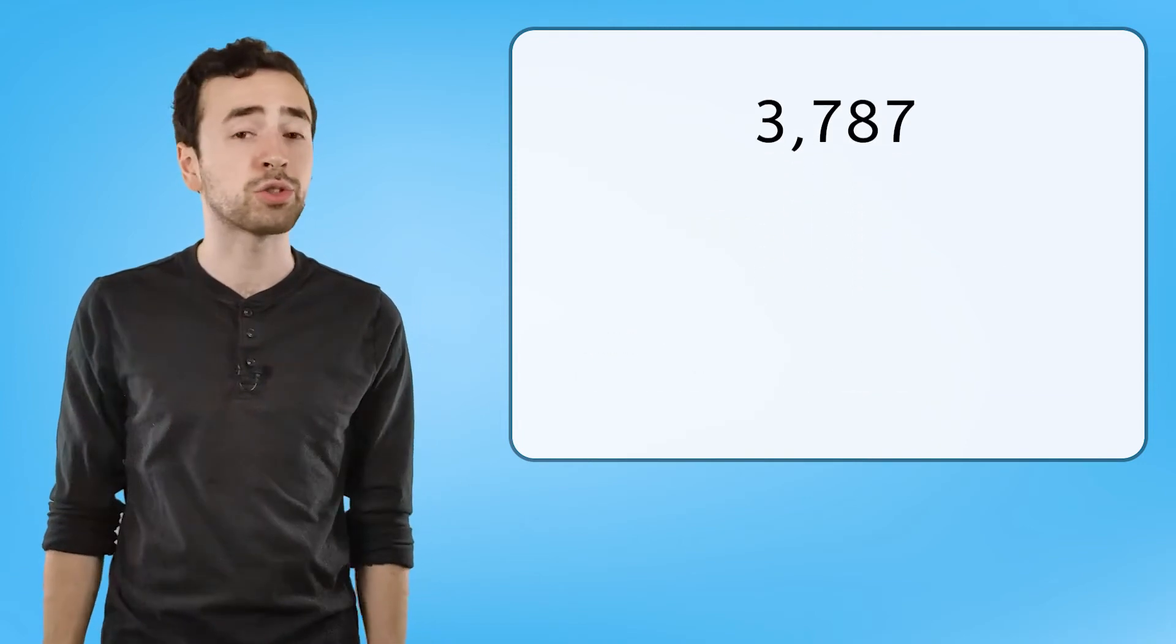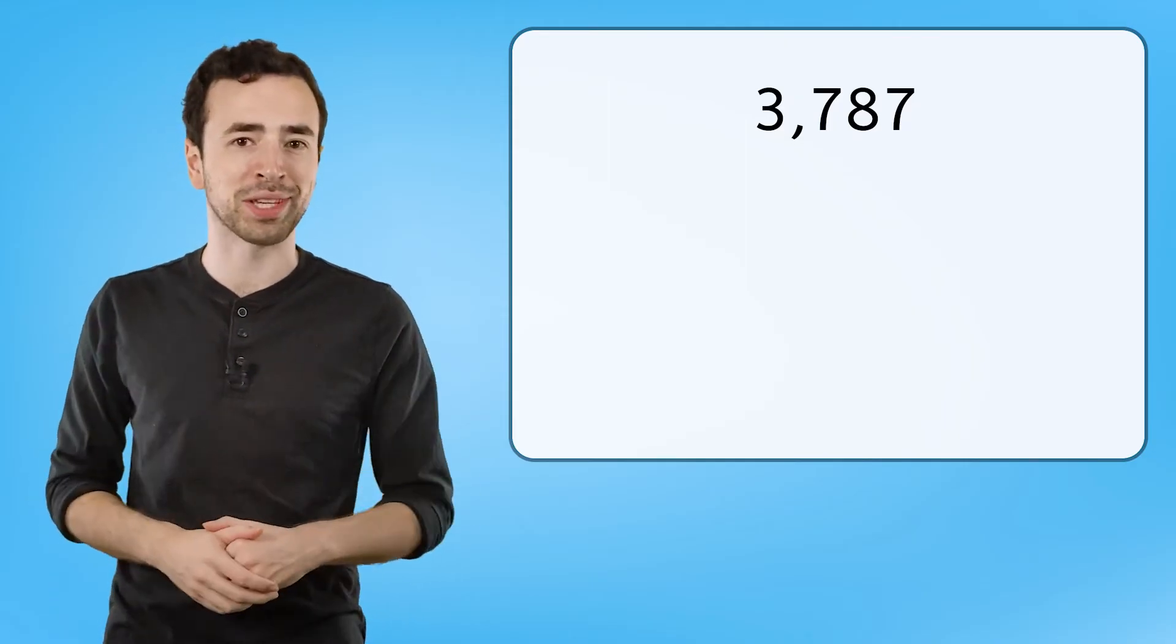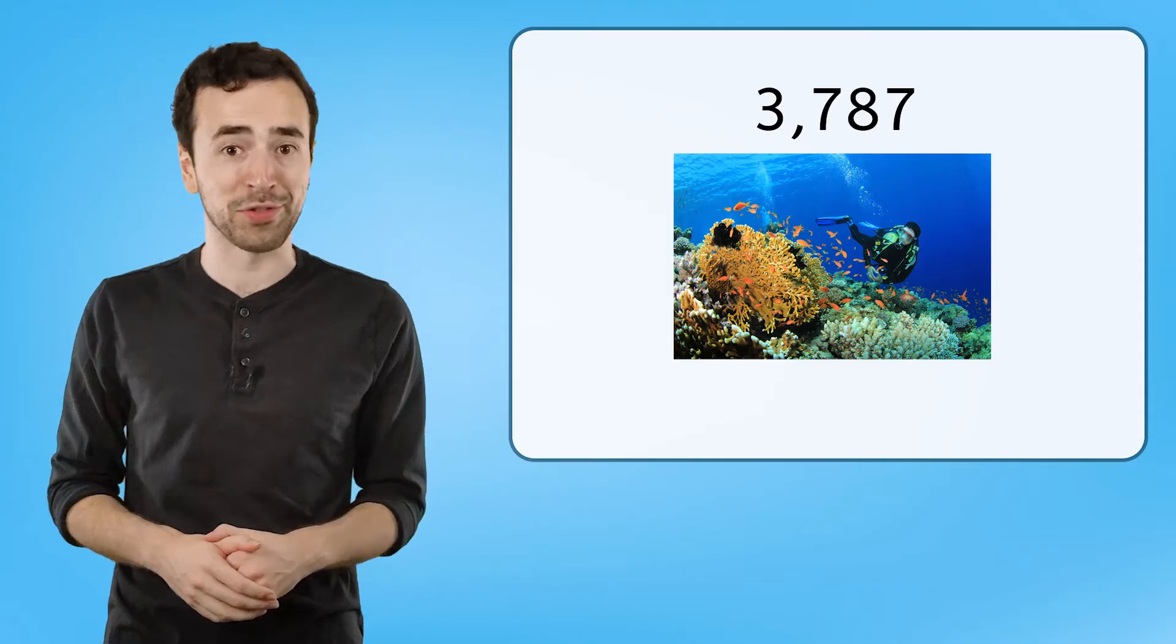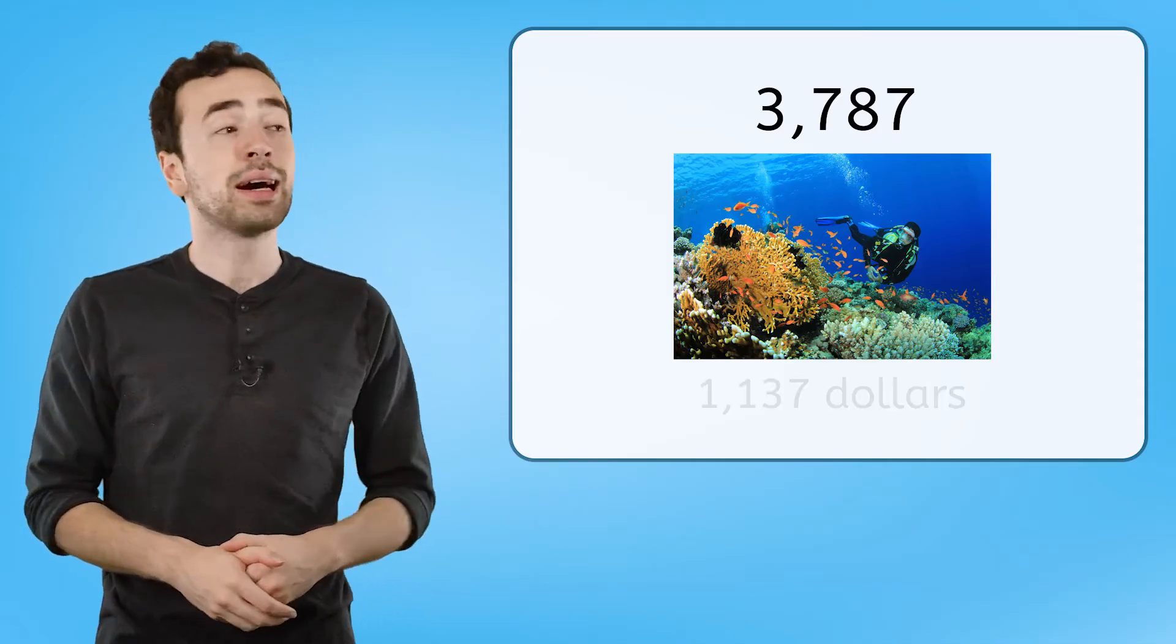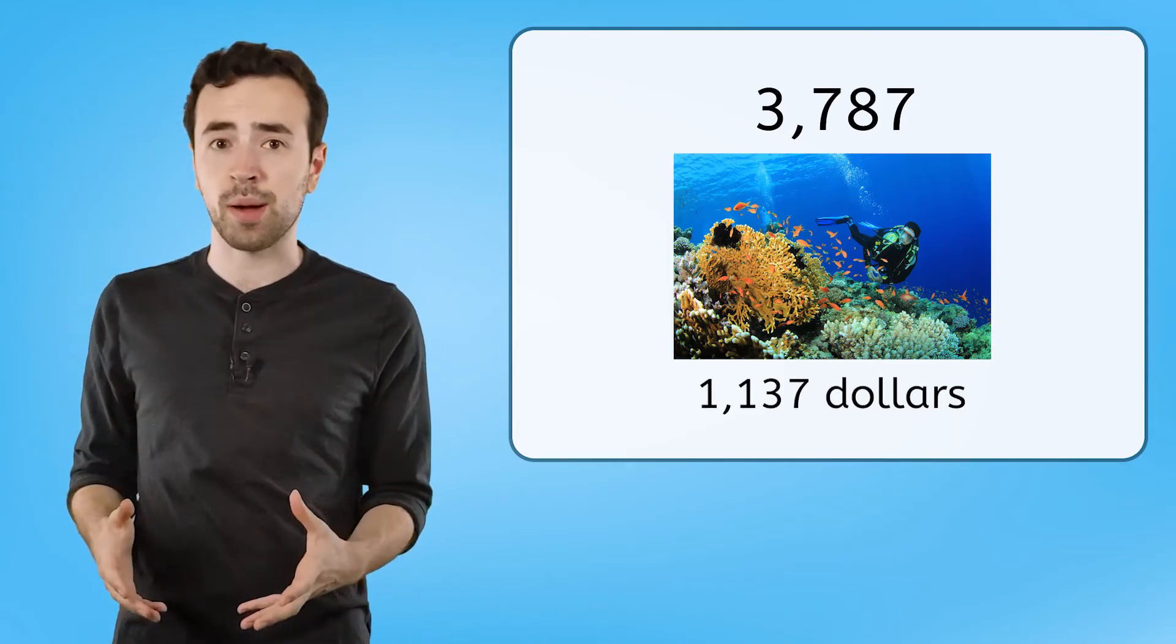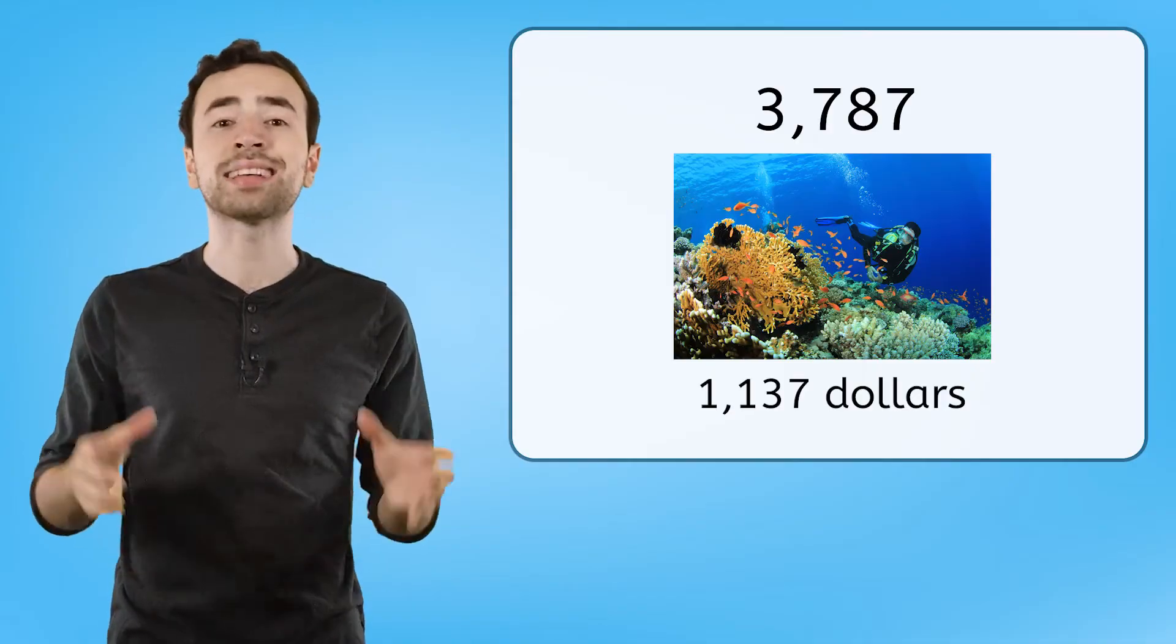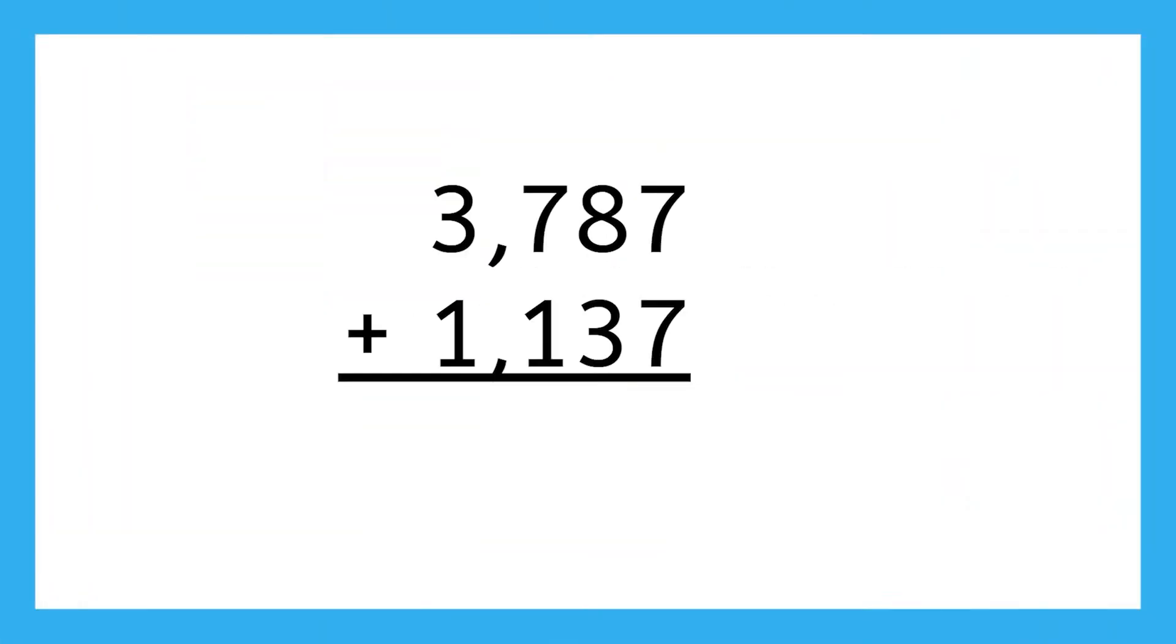Let's take that sum of three thousand seven hundred eighty-seven, and add on another item from my dream vacation list. I want to go scuba diving a few times while I'm there, which will be another one thousand one hundred thirty-seven dollars. Let's create another addition problem with the current total and the additional cost of scuba diving as the addends. With our numbers stacked vertically, we can start by adding the digits in the ones place. Here, we have seven ones plus seven ones. That equals fourteen ones, but... fourteen isn't a single digit for the ones place.